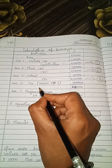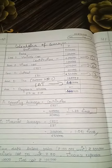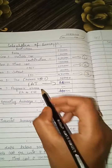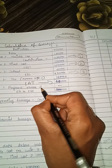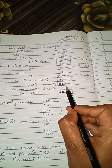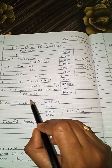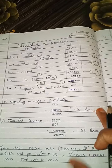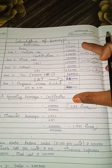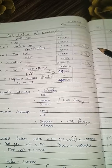Finally we have 1 lakh 40,000 remaining, which we call EAT — earnings after tax. Next we deduct preference share dividend; since it is not given in the problem, we leave it. The final balancing figure is earnings available to equity shareholders. This is the full format used to calculate leverages.